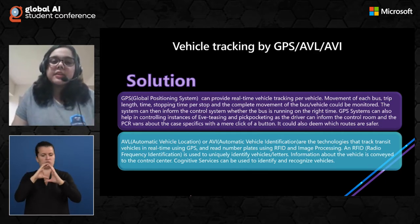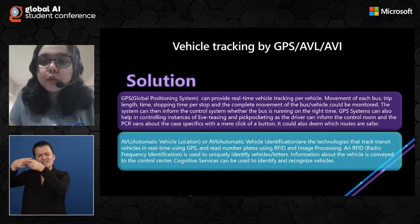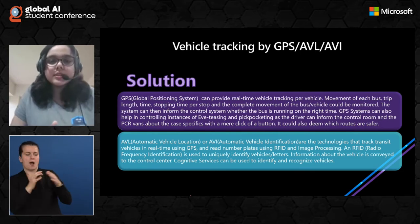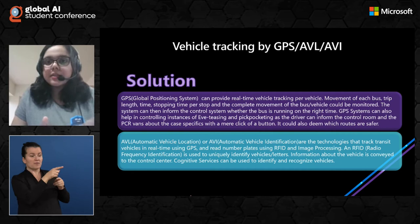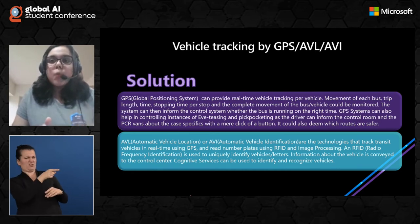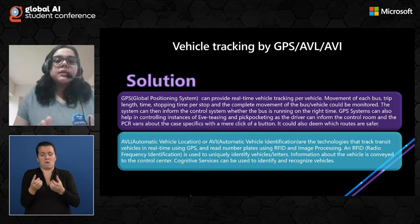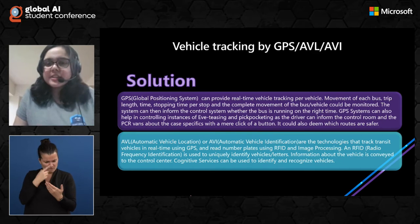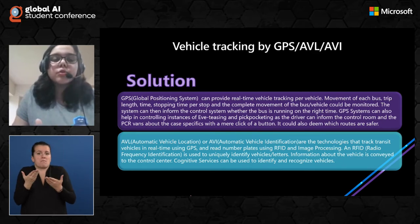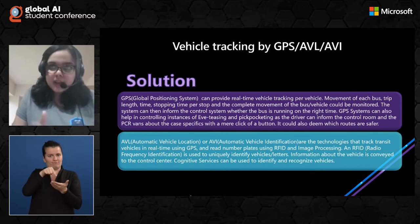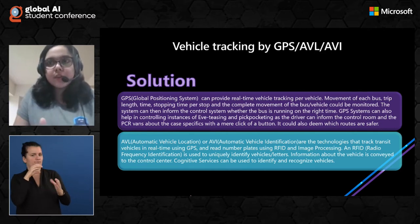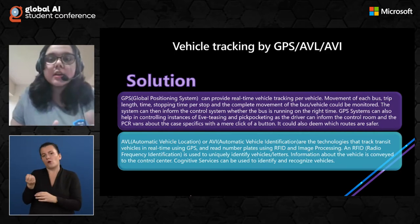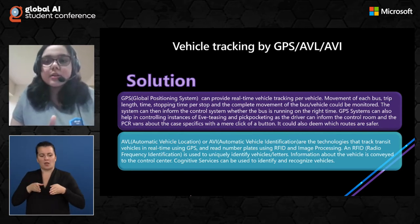GPS can provide real-time vehicle tracking for every vehicle — the movement of each bus, trip length, time, stopping time per stop, and complete movement of the vehicle could be monitored. The system can then inform the control center whether the bus is running on time or not, and artificial intelligence can be used to determine why the bus is not running on time. GPS systems can also help control instances of eve-teasing and pickpocketing, as the driver or any passenger can inform the control room and police about case specifics. It could also determine which routes are safer by analyzing data from previous routes.